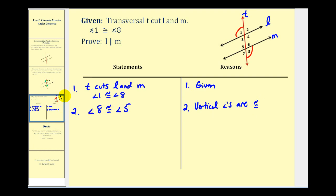This falls into place quickly because now we can use the transitive property to state that angle one is congruent to angle five. Since angle one is congruent to angle eight and angle eight is congruent to angle five, they are connected, so angle one is congruent to angle five by the transitive property.